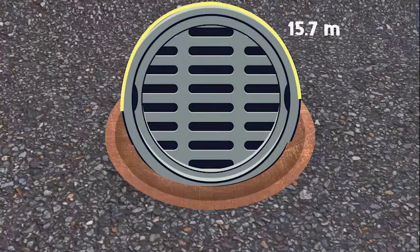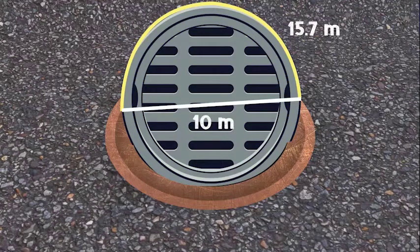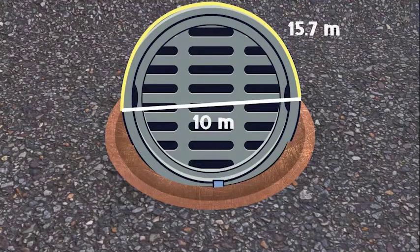So the length of the arc of the lid stuck on the manhole is more than the diameter of the circle, that is 10 meters. So the lid won't fall inside the hole from any direction.